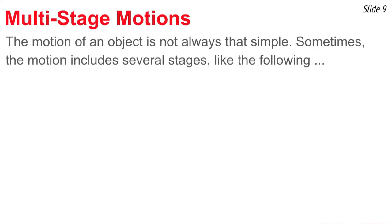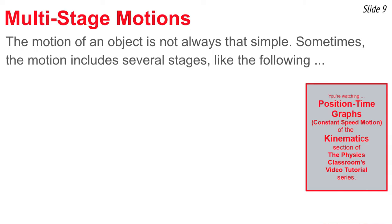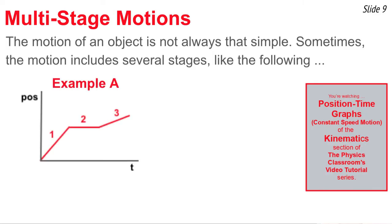Now we get to the difficult stuff. Objects don't always move simply — often they move in stages, moving one way for a few seconds then changing. We call this multi-stage motion. A position-time graph for multi-stage motion might show more than one line. In example A, we see three lines. Line one has a constant positive slope — constant positive velocity. Line three also has a constant positive slope, but smaller — so stage one is faster than stage three. Stage two shows a horizontal line with zero slope — zero velocity.